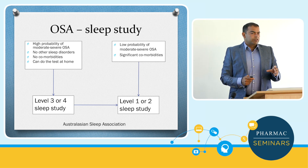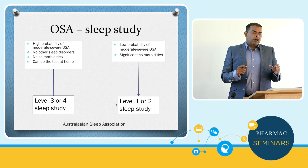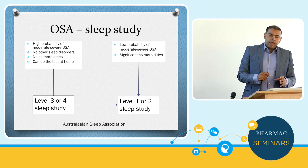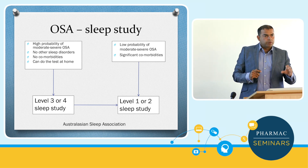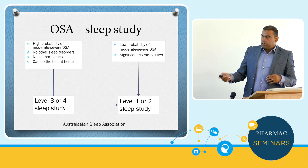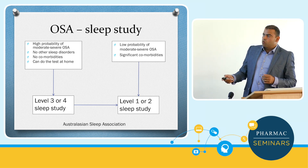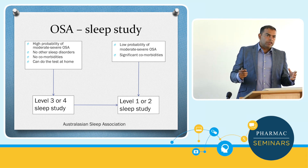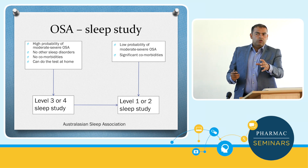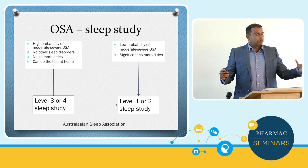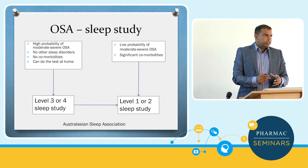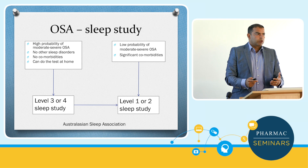Hamilton Hospital Sleep Service has done a fantastic trial, which they've adopted into practice. Rather than having all patients come to hospital for level one or two studies, they de-escalated to a wider group doing level three or four at home, overnight oximetry or level three study, and then went straight on to CPAP. Their waiting list dropped from years down to months or weeks, and a lot of patients could get on to CPAP a lot quicker.